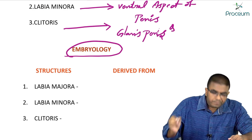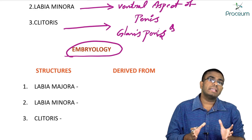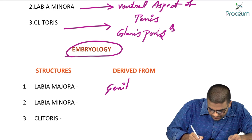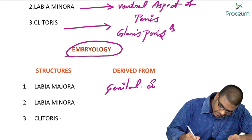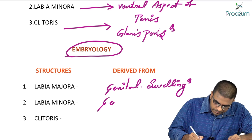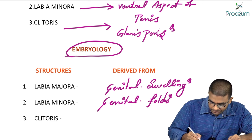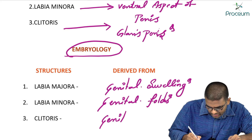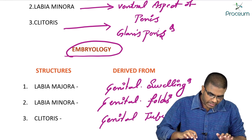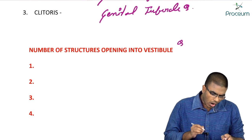Regarding embryology: labia majora are derived from genital swellings — a very important MCQ. Labia minora are derived from genital folds. Clitoris takes its origin from the genital tubercle.